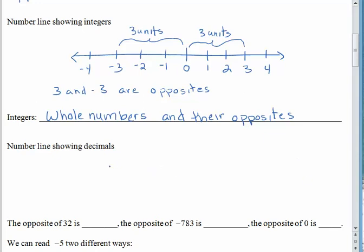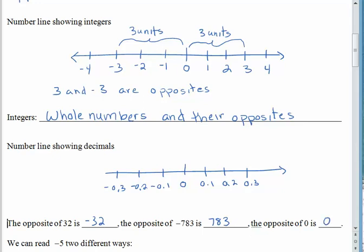Of course, we don't have to just put integers on our number line. We could put all sorts of things. Maybe we could count by tenths. So here we have zero point one, zero point two, zero point three, and so on. And of course, the negative numbers mirror this. Negative zero point one, negative zero point two, and negative zero point three. So opposites are numbers that have the same distance away from zero. The opposite of 32 is exactly what you think it is, negative 32. The opposite of negative 783, so we want to go on the other side of zero, is a positive 783. What's the opposite of zero? Well, that's just itself. Zero is the only number that is its own opposite.